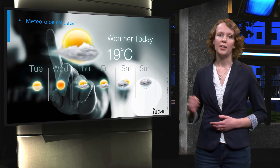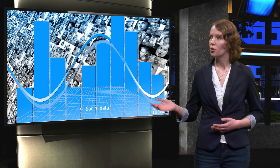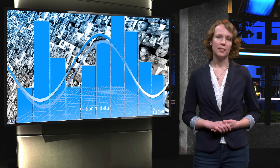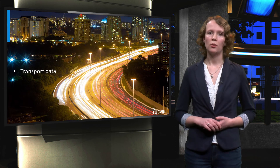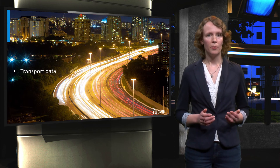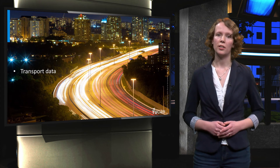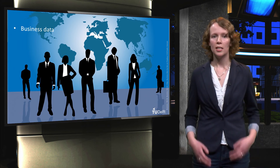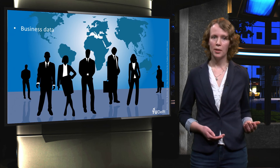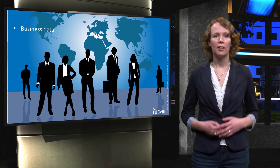The data can be meteorological data, including climate data and models and weather forecasts. It is also social data, such as statistics about the economy, employment, health, population, and public administration. Transport data can also be open government data, for example information on traffic congestion, work on the roads, public transport, and vehicle registration. And a sixth type mentioned by Deckers and colleagues is business data, such as Chamber of Commerce information, official business registers, patent and trademark information, and public tender databases.